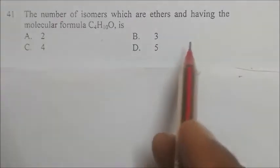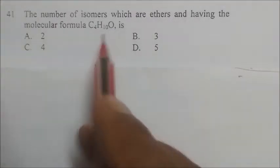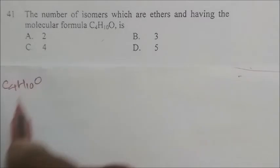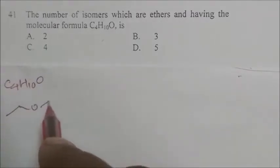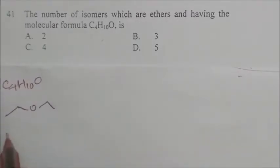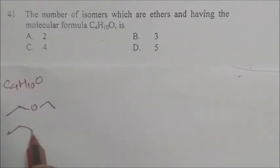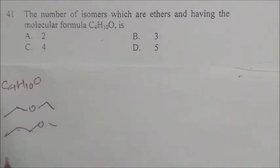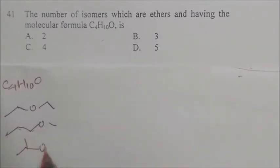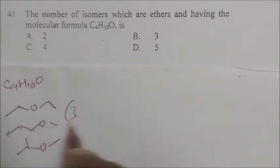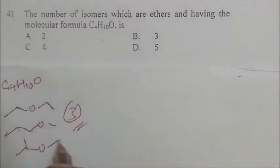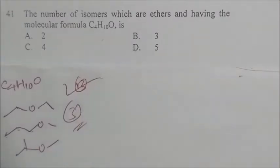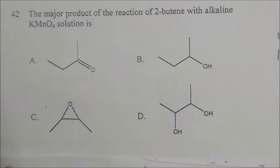The number of isomers that are ethers with molecular formula C4H10O: we can write methyl propyl ether, ethyl ethyl ether, and methyl isopropyl ether — that gives three ether isomers. The answer is B.